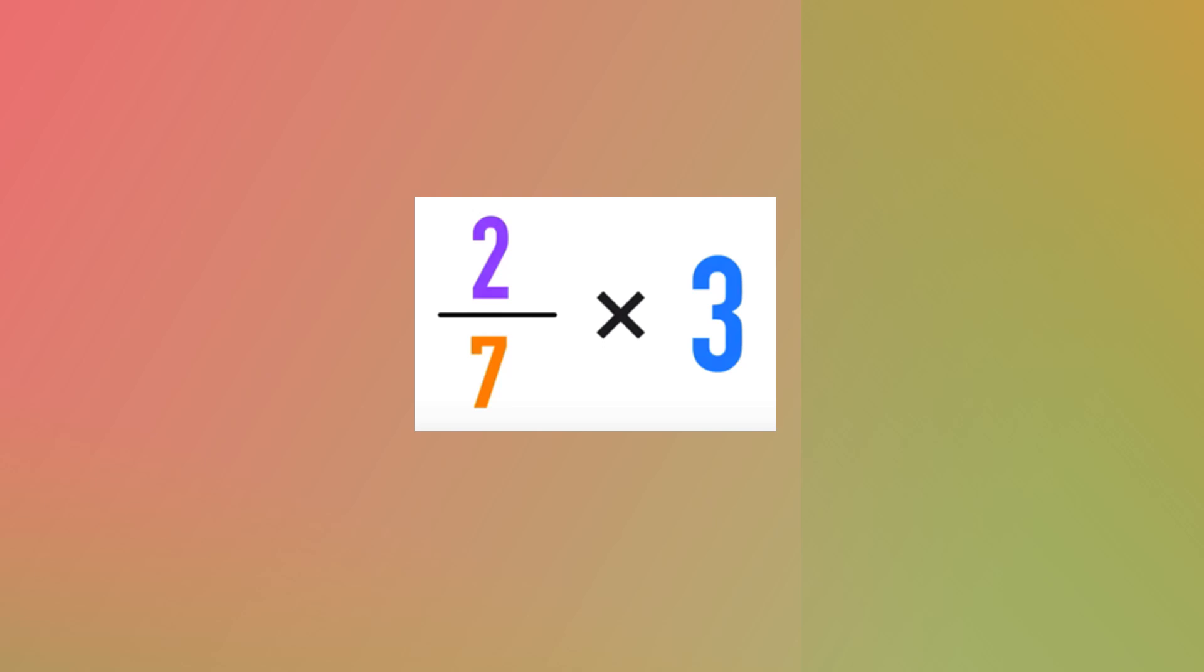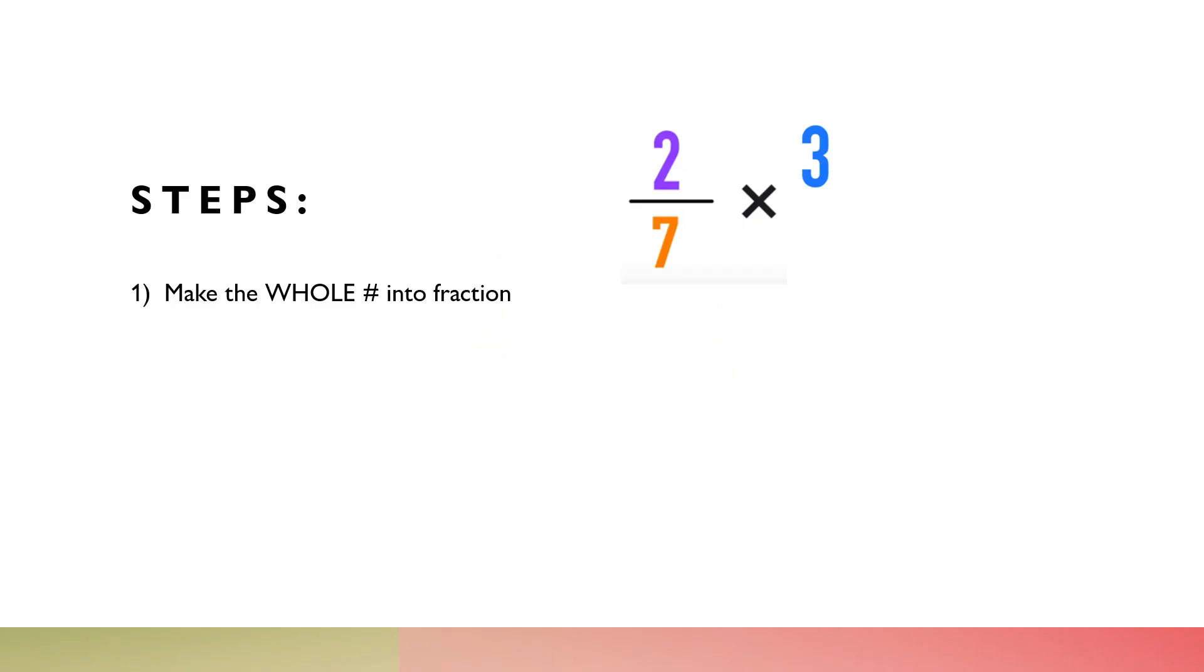There are four basic steps when we're multiplying fractions with whole numbers. Step 1: make the whole number into a fraction.